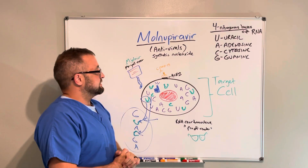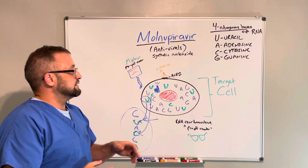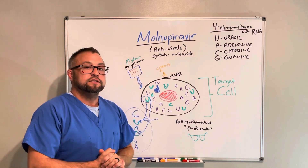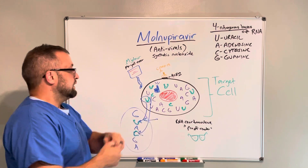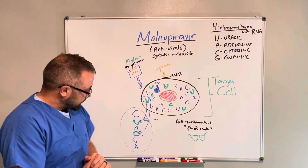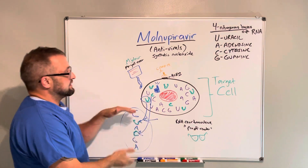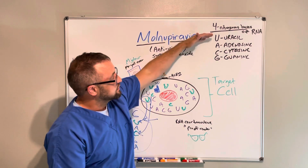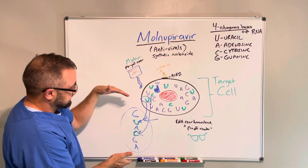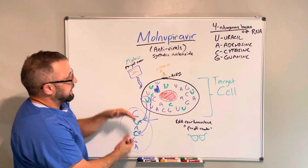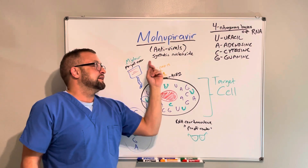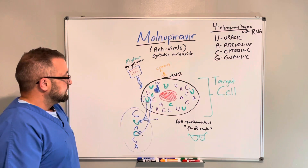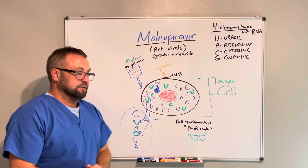As the virus attaches to this cell, it releases a blueprint and hijacks the mechanisms inside the cell so that it can replicate or build itself. It gives a blueprint saying, this is how you build my RNA, using combinations of nitrogenous bases. These antivirals come in because they look like these nitrogenous bases, but they're not — they're like bad building materials.